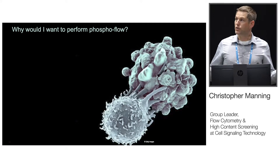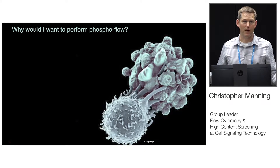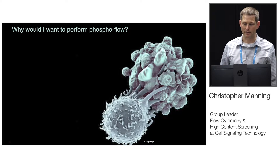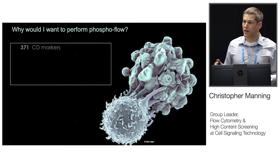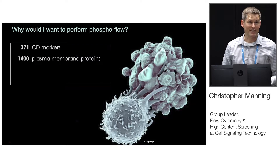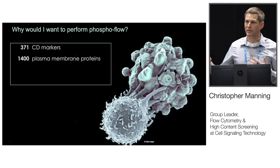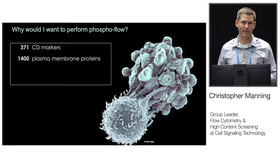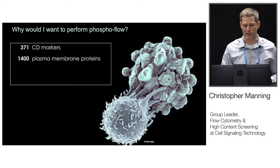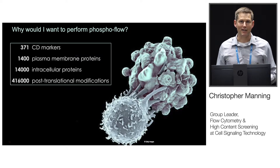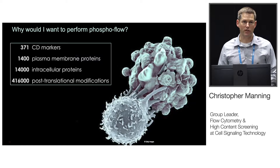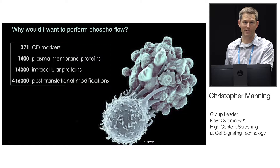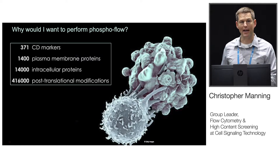First, to step back and ask: why would you want to perform phosphoflow — analyzing phosphorylated proteins by flow cytometry? As you may know, there are roughly 370 CD markers you can use for phenotyping and about 1,400 extracellular proteins that you can read out on live cells. But if you start looking inside the cell, you get a much broader range of information — not just what is this cell, but what is this cell doing, and how is that happening?